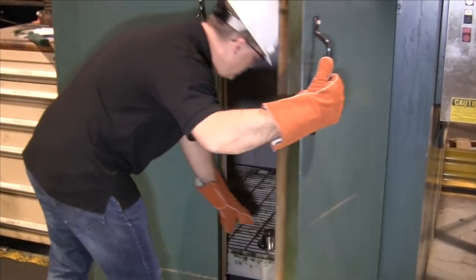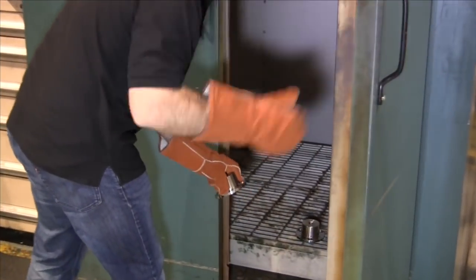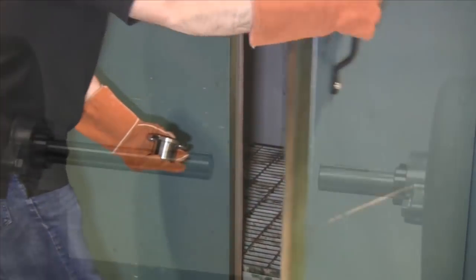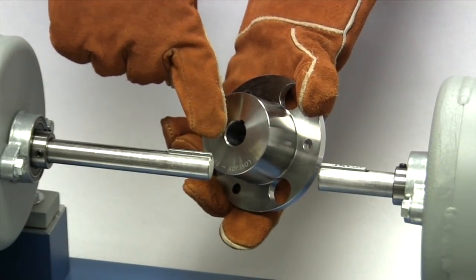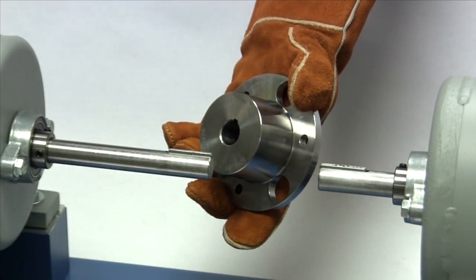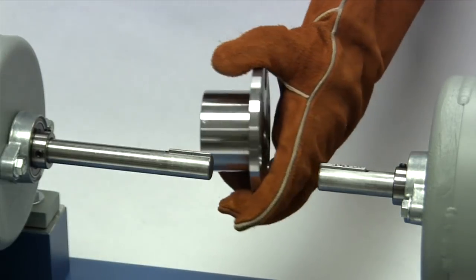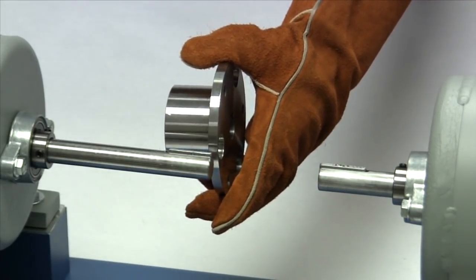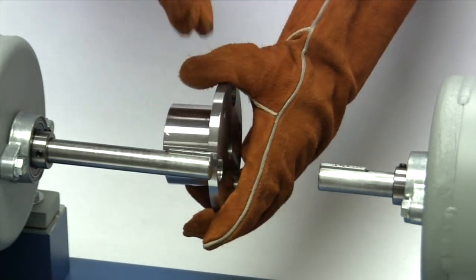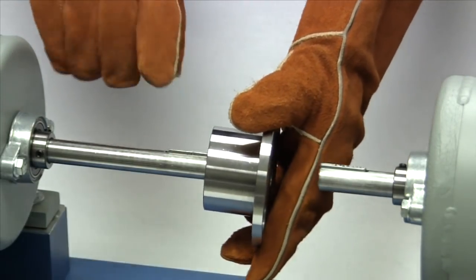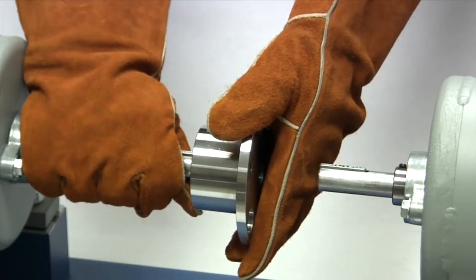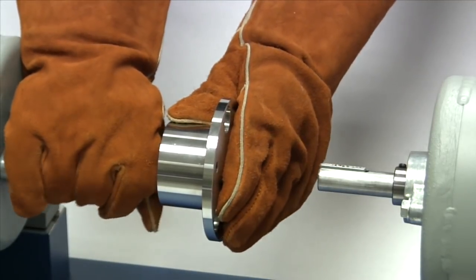When the hubs reach the recommended temperature, the bores will be expanded enough to provide a few thousandths of clearance when sliding the hubs onto the shafts. Make sure each hub is oriented with the flanged end of the hubs facing the end of the shafts. The keys should already be in place in the keyways and the hubs should slide onto the shaft with little or no difficulty. Each hub will start cooling down right away and you will need to work quickly and accurately to position the hubs on the shafts.